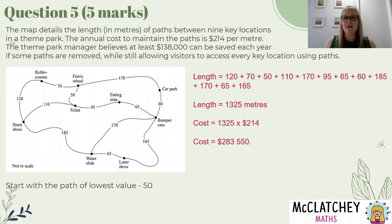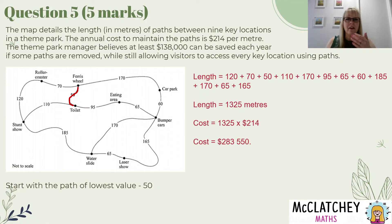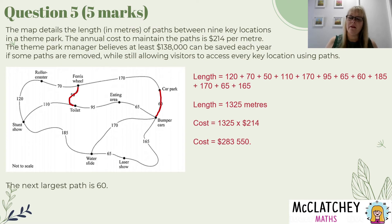With Kruskal's algorithm, I look for the path with the lowest value. Looking through the network, that's the path between the Ferris wheel and the toilet — a path of 50 — so I draw that in first. Then the next lowest value is 60, the path between the bumper cars and the car park, so I draw that one in. Next is 65, from the bumper cars to the eating area and also between the water slide and the laser show — so now I've got four paths drawn in. The next is 70, from the Ferris wheel to the roller coaster.